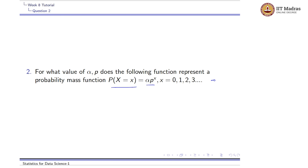What are the conditions for this to be a valid PMF? The first condition is that for each x equals 0, 1, 2, 3 and so on, the value should be greater than 0. If you put x equals 0, it equals alpha, so alpha should be greater than 0. If you put x equals 1, it equals alpha times p, so alpha*p should be greater than 0.